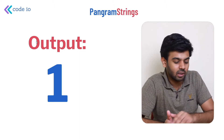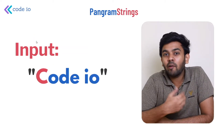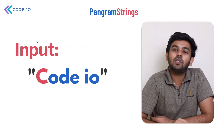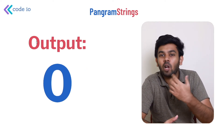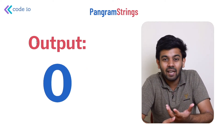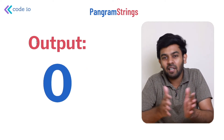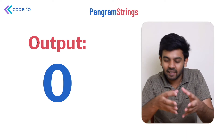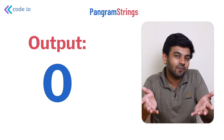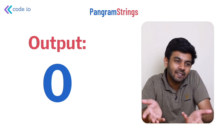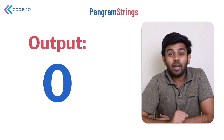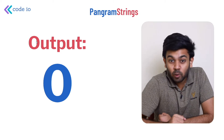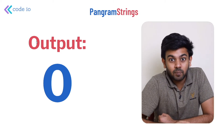Let's say 'codeio' is another input. For this input the output should be zero, because 'codeio' doesn't have all the alphabets in the English language — it's not even the size of 26.